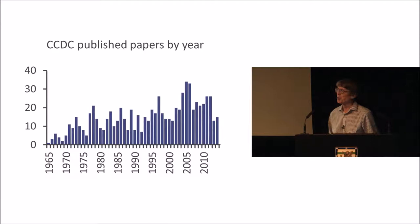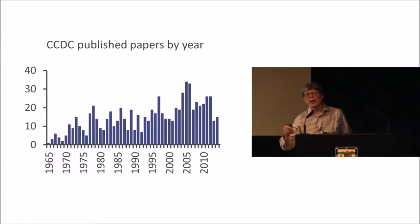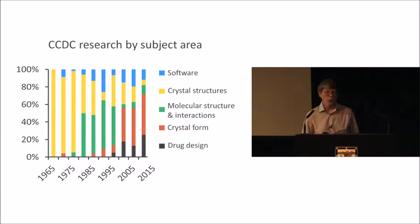So I'm going to start with two overview slides. This one is a histogram of the number of papers published by CCDC, either solely or in collaboration, as a function of year. You see it's kind of spiky but there's a general trend upwards as we go through the years, and the peak around about 2005 has got a lot to do with the Pfizer Research Institute, of which more later.